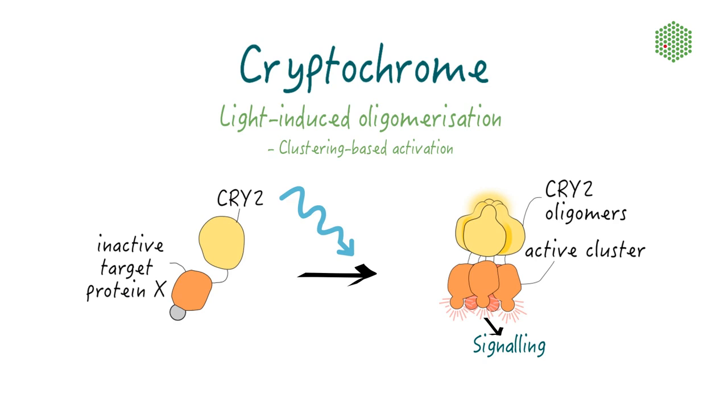However, depending on the target protein, clustering can also negatively interfere with cell signaling, for example due to steric hindrance.